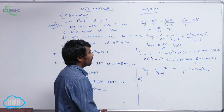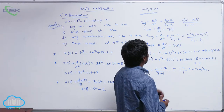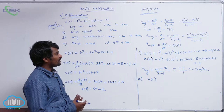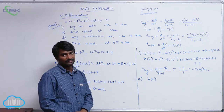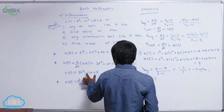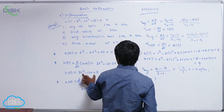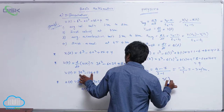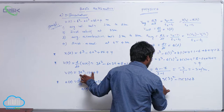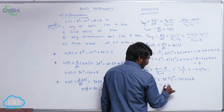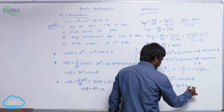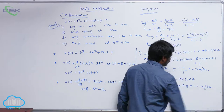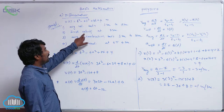The second question asks for instantaneous velocity at t = 3 seconds. We already have v(t) = 3t² - 12t + 8, so we substitute t = 3: v(3) = 3(3²) - 12(3) + 8 = 27 - 36 + 8 = -1 meter per second. So the velocity of the object at t = 3 seconds is -1 m/s.